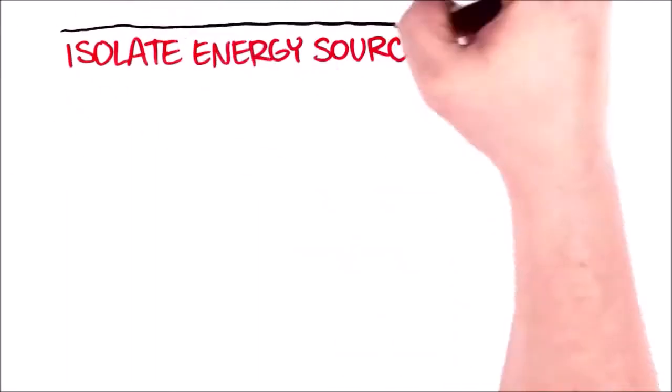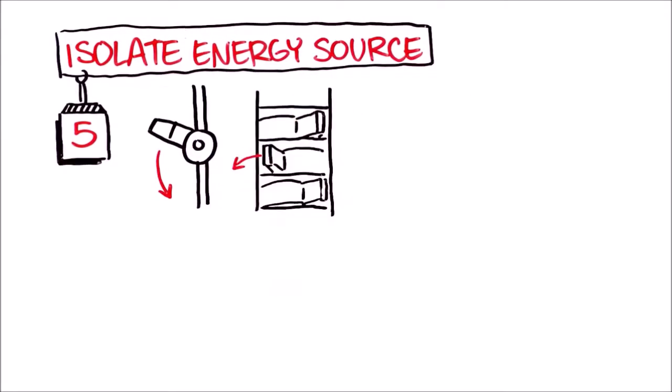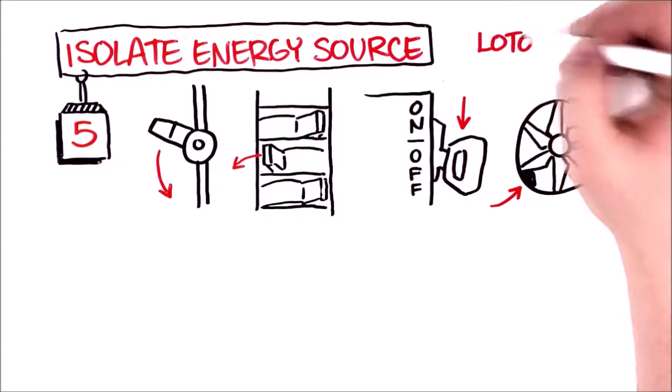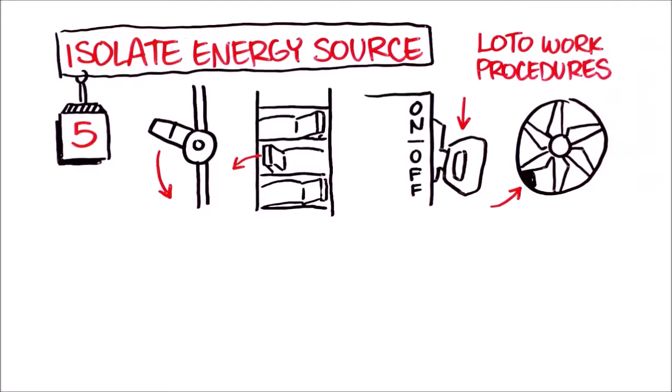You also need to isolate energy sources: turn off valves, flip circuit breakers, throw a disconnect switch, block a fan or hatch. When you're figuring out how to isolate the energy source, make sure you reference and follow the LOTO work procedure or instructions for the details.